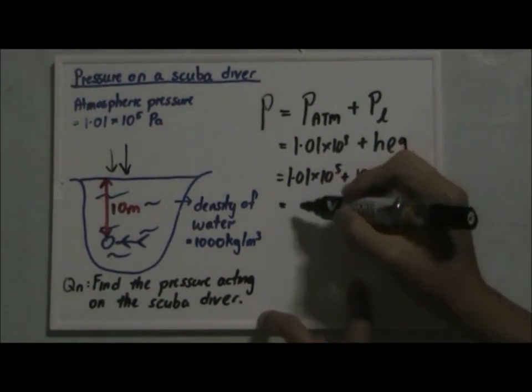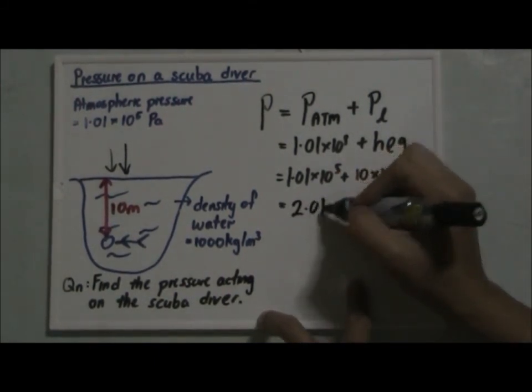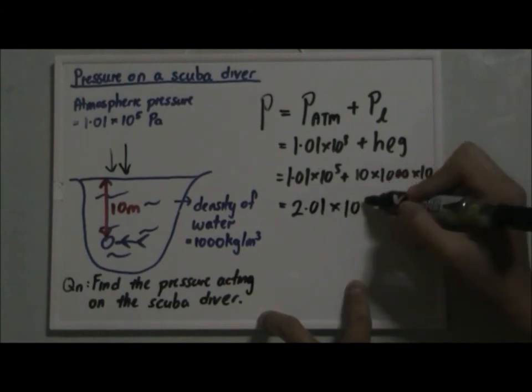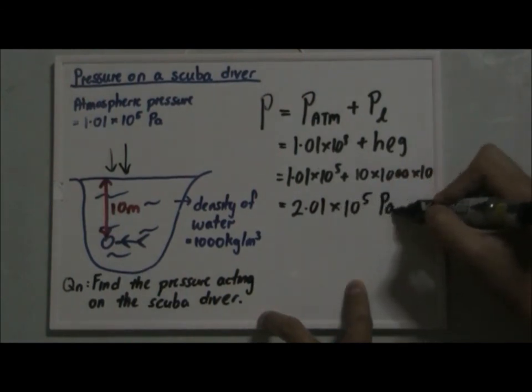So in this case, we will add up to 2.01 times 10 to the power of 5. That's done.